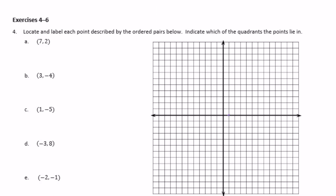Number 4: locate and label each point described by the ordered pairs below and indicate which quadrant each point lies in. Point A is (7, 2) — we go over 7 and up 2. That's in quadrant 1. Remember it goes clockwise: quadrant 1, 2, 3, and 4. Point B is (3, -4) — we go over 3 to the right, then down 4. That is in quadrant 4.